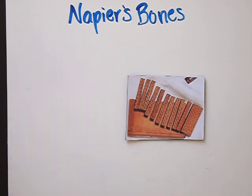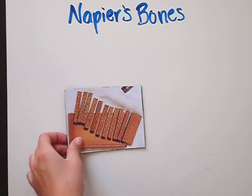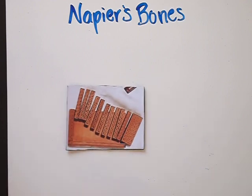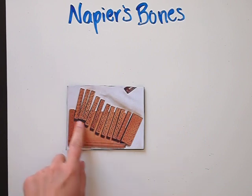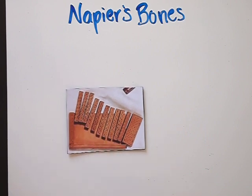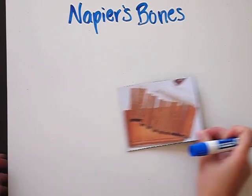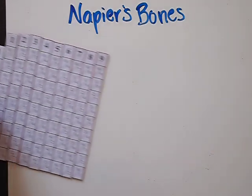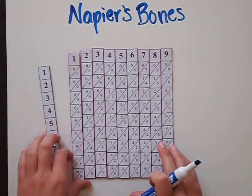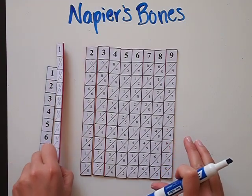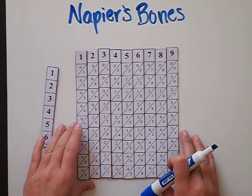So how do these bones work? The rods, or bones, were essentially multiplication tables inscribed on sticks of wood or bone. Napier created the rods in sets of 10 rectangular blocks with multiples of a different digit on each of the four sides. Not having a set of my own, I decided to make some out of paper and back them with foam so they would be easier to move around while I show you how they work.